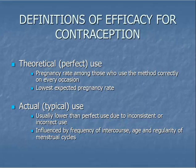The efficacy of a contraceptive method, or how well it works, depends on correct use of the method. When a contraceptive method is used perfectly, it might still result in pregnancy. This failure rate after perfect use is called the theoretical or perfect use failure rate. In the real world of typical contraceptive users, more mistakes may happen during usage, leading to a higher pregnancy rate, which is considered the actual or typical use failure rate.